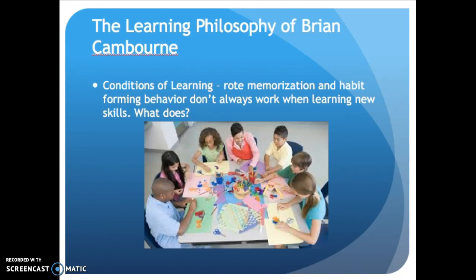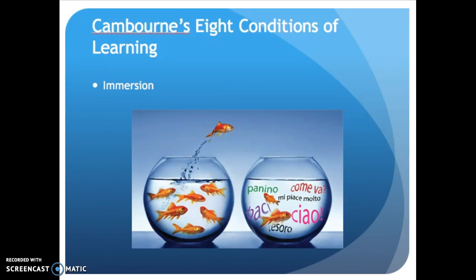A little background on Brian Camborn: he discovered that some students don't learn basic skills through rote memorization and habit-forming behavior, which is the format in a lot of public education. However, all students seem to be able to learn their native language, so this led him to consider the conditions of learning — under what conditions are students able to learn? He came up with eight conditions of learning.